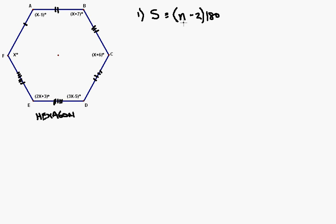So the number of sides is 6. The sum of the interior angles of this hexagon is the quantity 6 minus 2, times 180. So, subtracting 2 from 6, I get 4, times 180. And multiplying 4 times 180, I get 720. So, the answer to number 1 is 720 degrees.